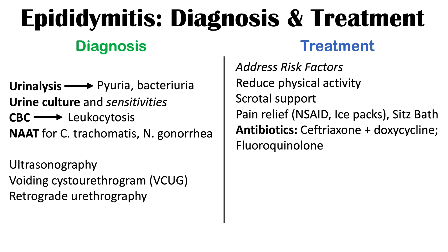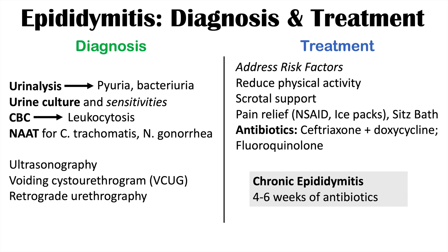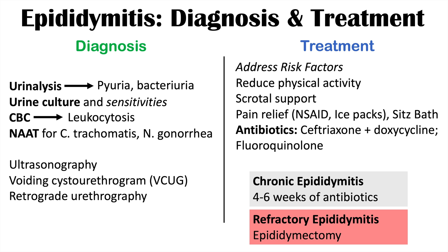If an enteric bacterium is the cause, a fluoroquinolone like levofloxacin is important, as fluoroquinolones have better penetration of the testis and scrotal tissue. For chronic epididymitis — defined as discomfort or pain of the epididymis, scrotum, or testis for at least three months — four to six weeks of antibiotics are indicated. For refractory epididymitis where multiple treatments have failed, surgical removal of the epididymis, called an epididymectomy, is a potential treatment option.